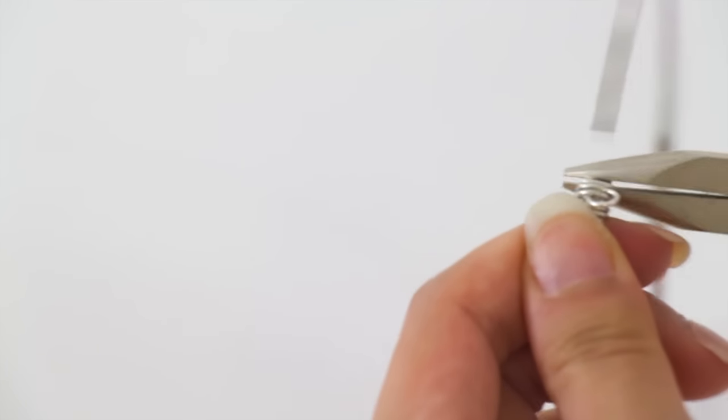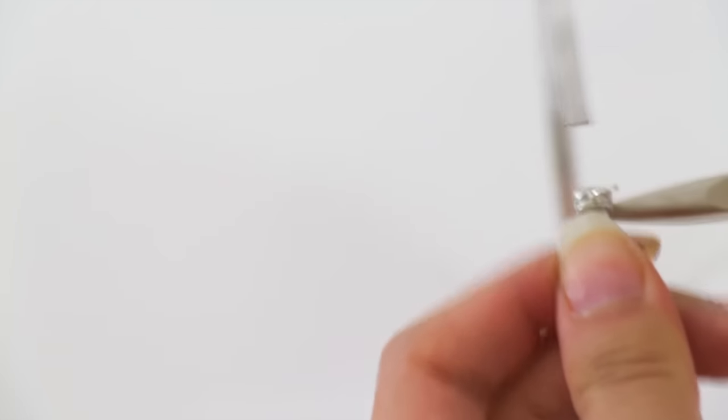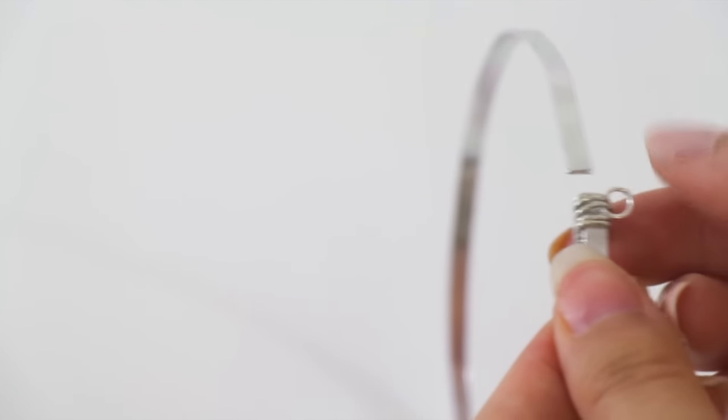To make sure none of the wire pokes you, take the ends of the frame, and then just bend it back towards where you wrapped it. Repeat the same process onto the other side.